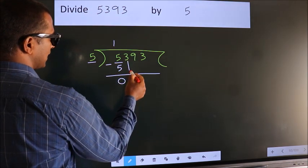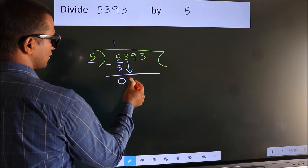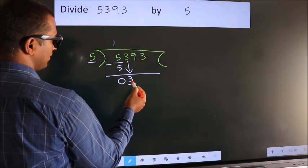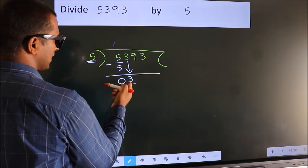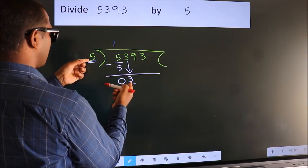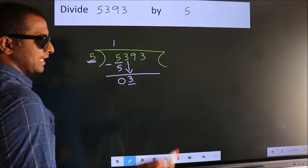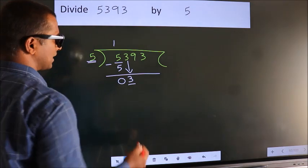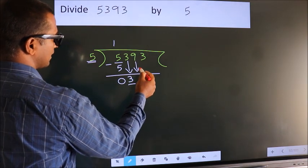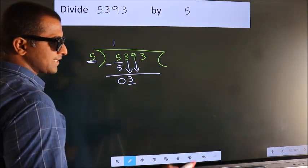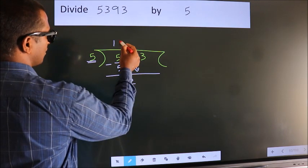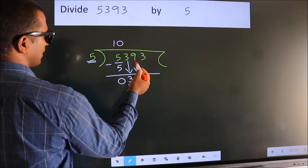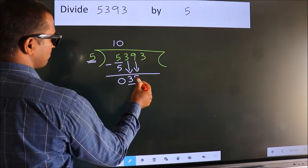After this, bring down the beside number. So 3 down. Here we have 3. Here 5. 3 smaller than 5. So we should bring down the second number. And the rule to bring down second number is put 0 here. Then only we can bring down this number.